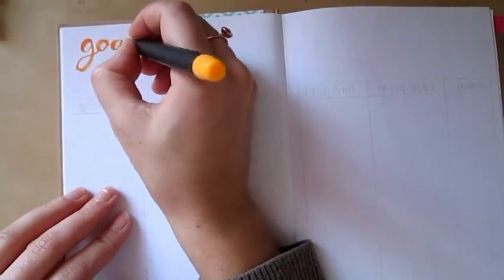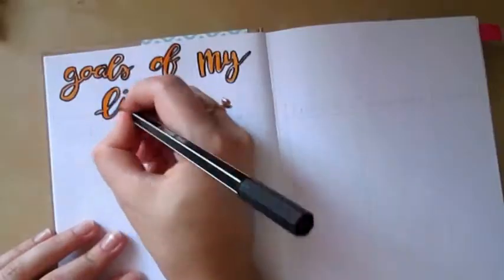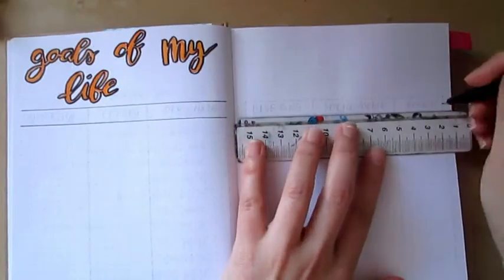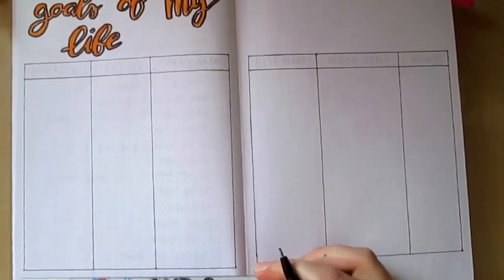Moving on with the goals of my life. A simple system that helped me to keep track of my projects and stay organized and stop procrastinating. I divided the pages in six columns